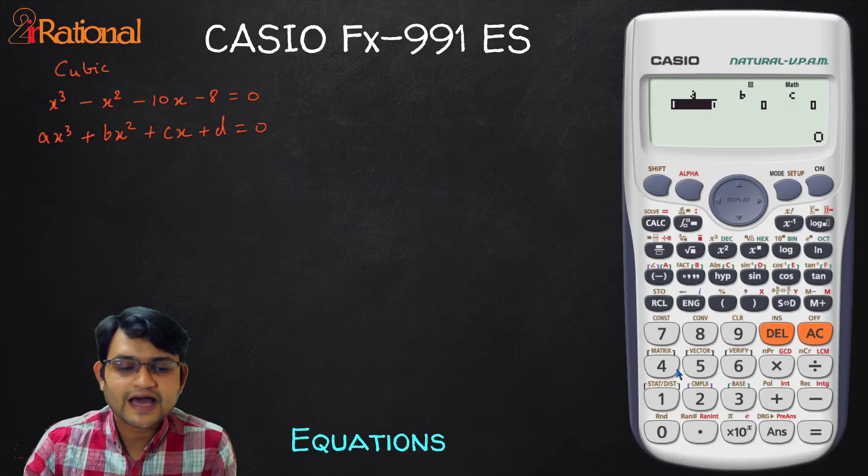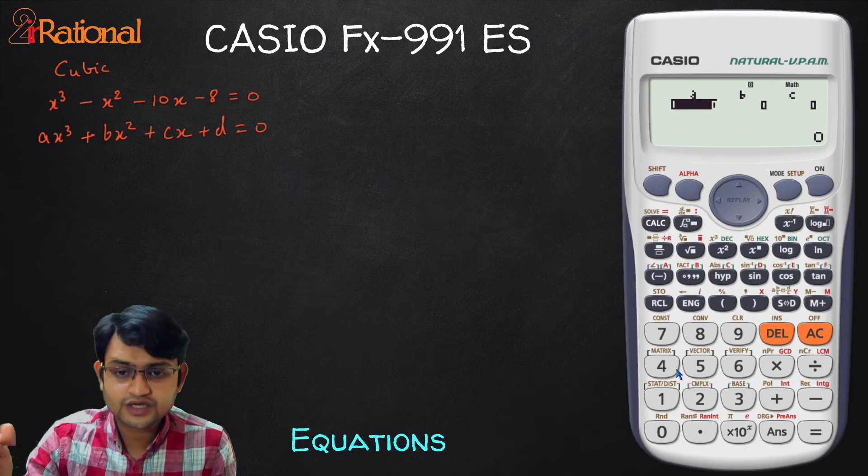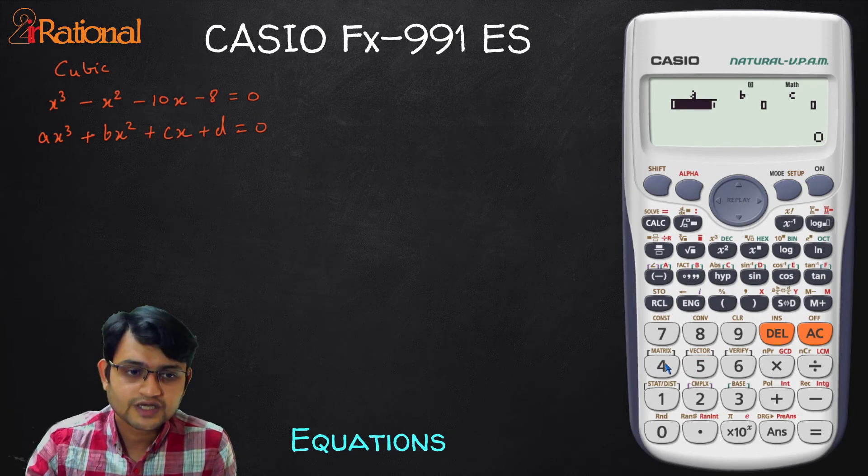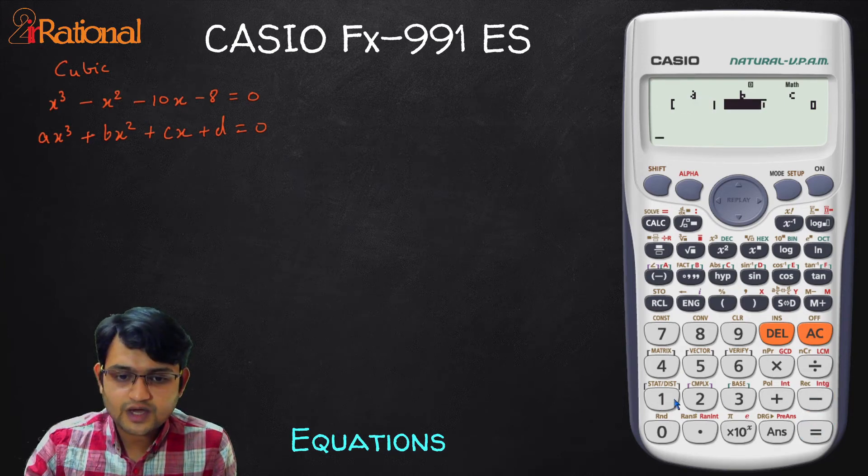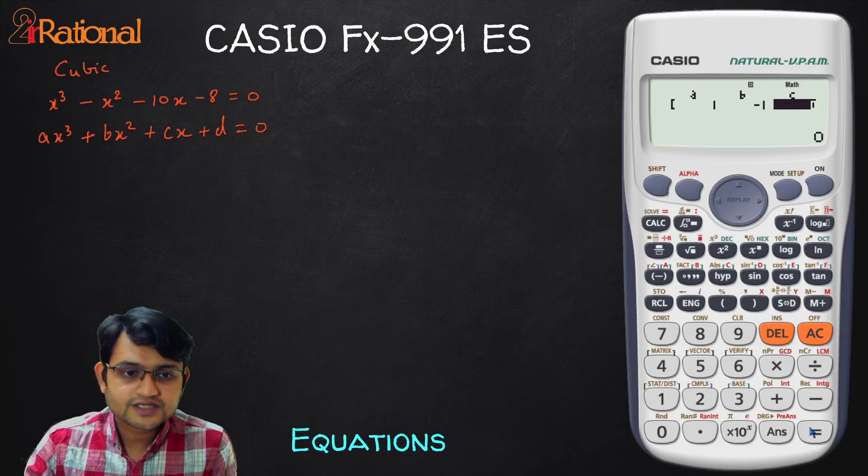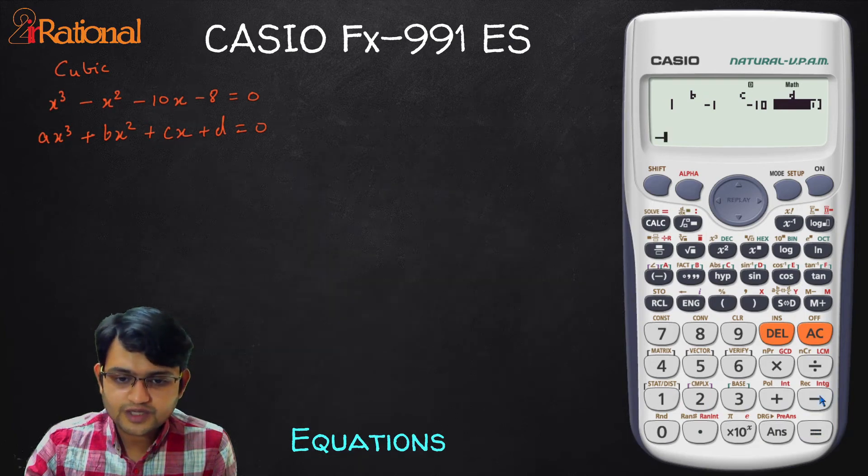If I press 4 it will ask me for A, B, C, D. Now here you cannot see D right now but it will ask you for D. So correspondingly we will say A is 1 equal to now B is minus 1, C is minus 10 and D is going to be minus 8.